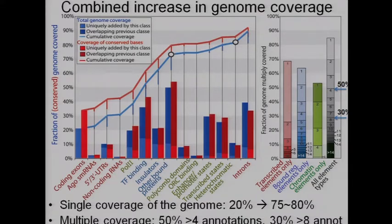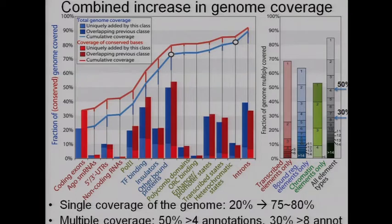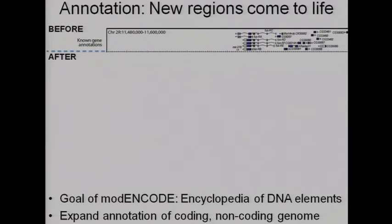So we've gone from about 20% of the genome being interpretable based on protein coding regions to nearly 80-90% using these diverse assays. Instead of just covering the genome each base once, we see the number of assays that multiply overlap these regions. About 5% of the genome is covered by more than 14 different regulators, and 65% of the genome is covered by at least one. About 50% of the genome is covered by at least four assays and 30% by at least eight assays. This is not just a painting of the genome — it's a multiple painting by many colors.